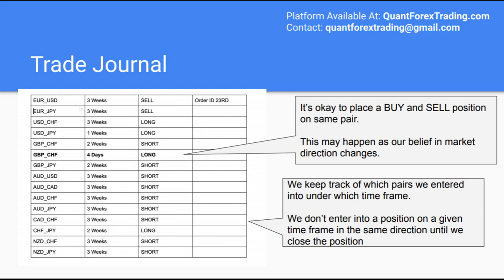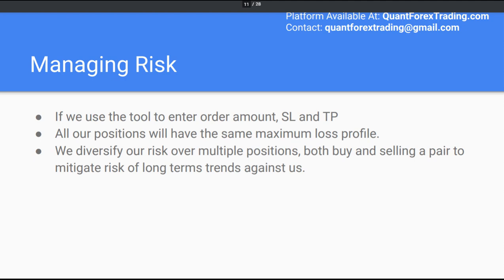The last thing we want to keep track of is which trades we have entered and under which timeframe, along with the order ID — this is often referred to as a trade journal. The idea is we don't want to enter a trade in the same direction on the same timeframe more than once, so as to not overexpose our position on a given currency pair. For the GBP CHF, we have entered both a long and short position, alluding to the fact that our opinion as to the fundamental direction of the pair has changed over time. When the market is highly volatile, we will profit in both the long and short position. By using the stop loss, take profit, and order size provided by the platform, we ensure our profit and loss is evenly distributed over every pair and timeframe. The strategy also allows us to use hedging to mitigate the risk of long-term trends against us.